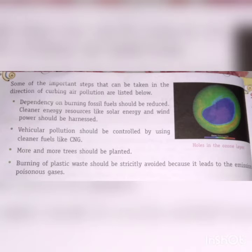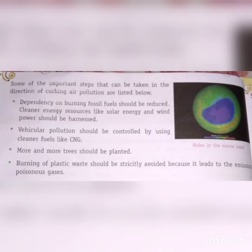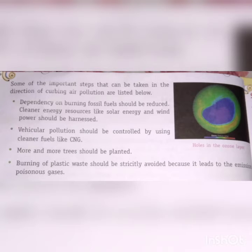Some important steps that can be taken to curb air pollution: First, dependency on burning fossil fuels should be reduced — jaise coal, petroleum etc. Cleaner energy resources jaise solar energy aur wind power energy ko achieve karna chahiye. CNG jaise cleaner fuels ka upyog karke vehicular pollution ko kam karna chahiye. Zyada se zyada ped lagane chahiye. Plastic waste ko jalane se strictly avoid karna chahiye kyunki isse poisonous gas nikalti hai.